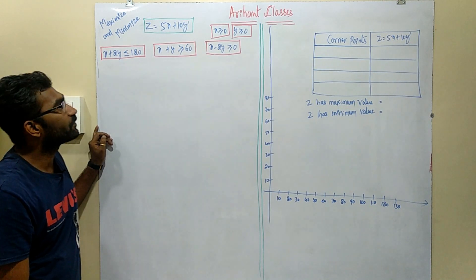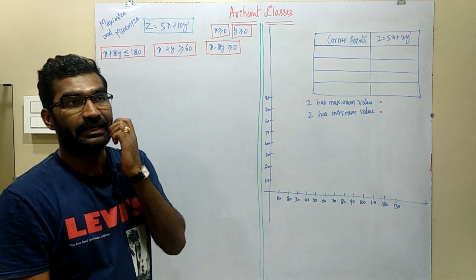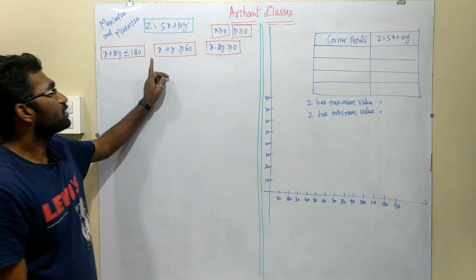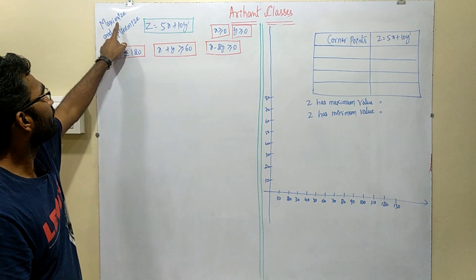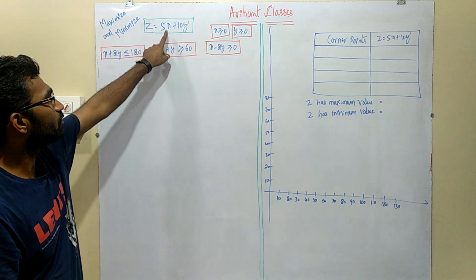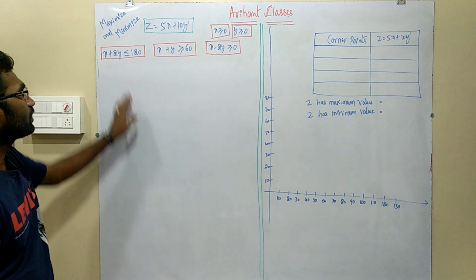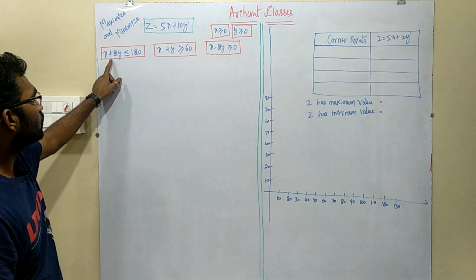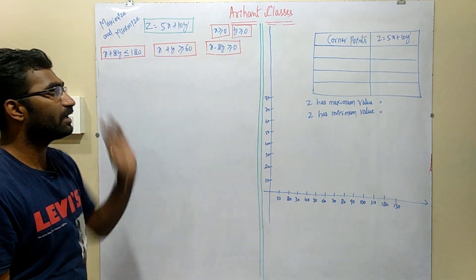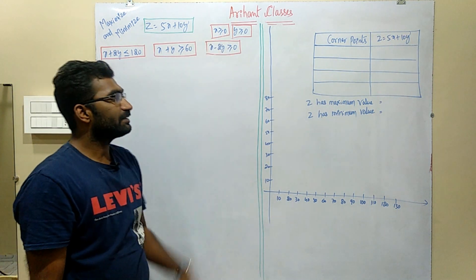Today we are going to discuss linear programming problems. The question will be asked like this: maximize and minimize the given objective function z equals 5x plus 10y, subjected to constraints or restrictions 1, 2, 3, 4, 5. They have given here inequalities, and by using these 5 inequalities I have to find the feasible region.